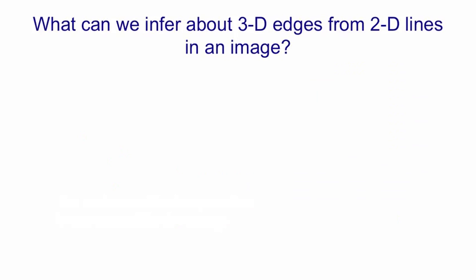I want to give an example of this to make the idea clearer. In order to give the example, I need to go into a little bit of detail about what you can infer when you see a 2D line in an image. What does that tell you about the three-dimensional world?